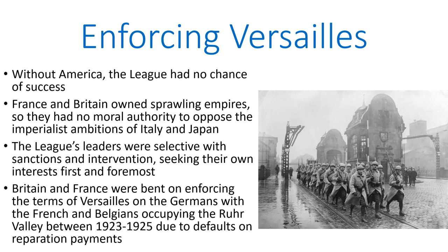The primary goal of Britain and France was not to prevent Mussolini from carving out an empire in Africa, but rather simply preventing German rearmament. And to prove exactly how serious they were about that, France and Belgium actually occupied the Ruhr Valley between 1923 and 1925 due to defaults on reparation payments. This is something that the League sanctioned since it was a part of the treaty. However, other acts of aggression abroad went unpunished.